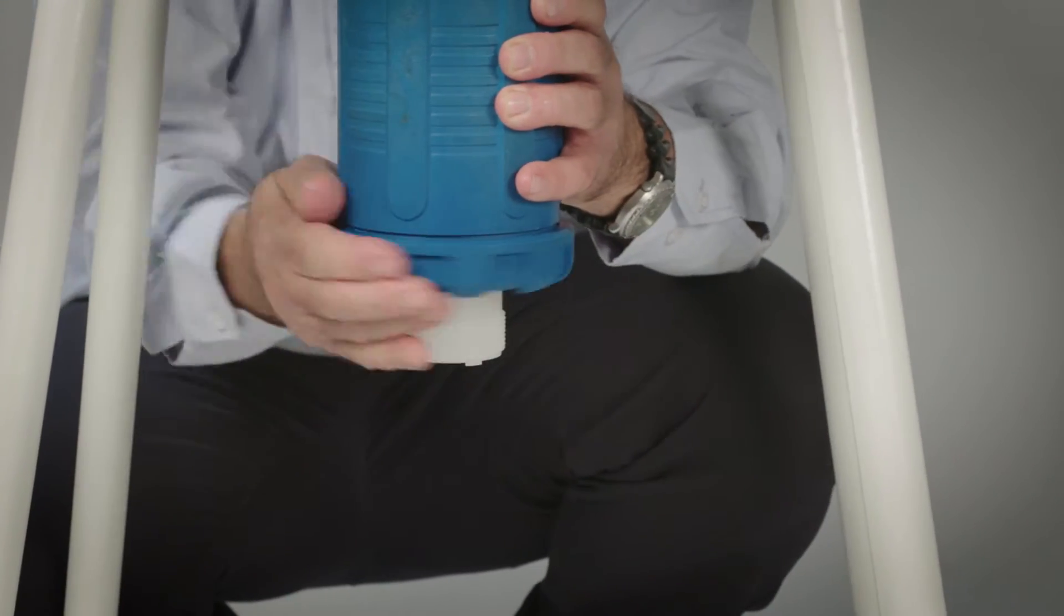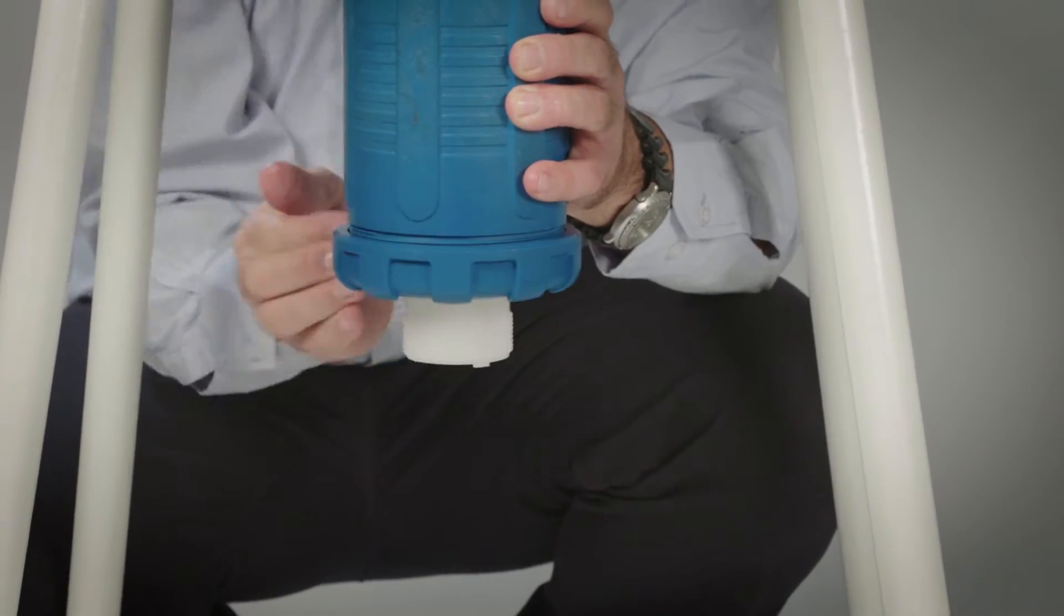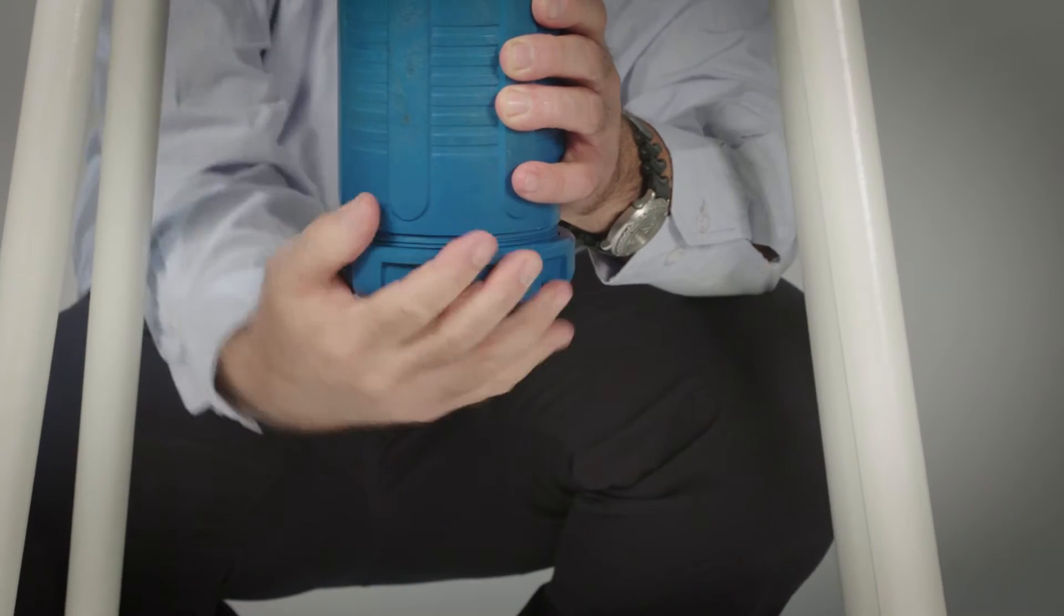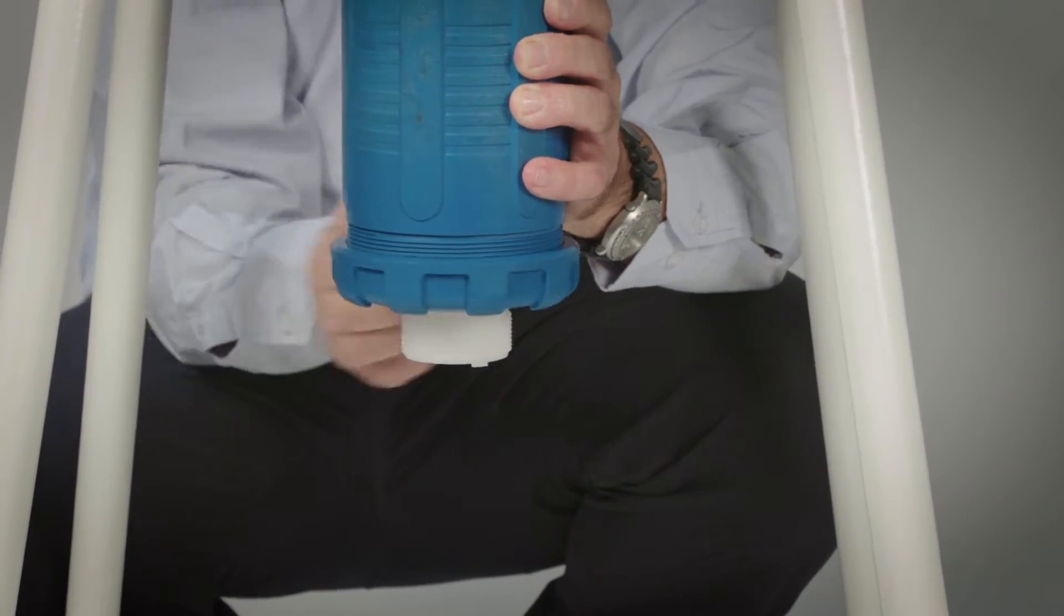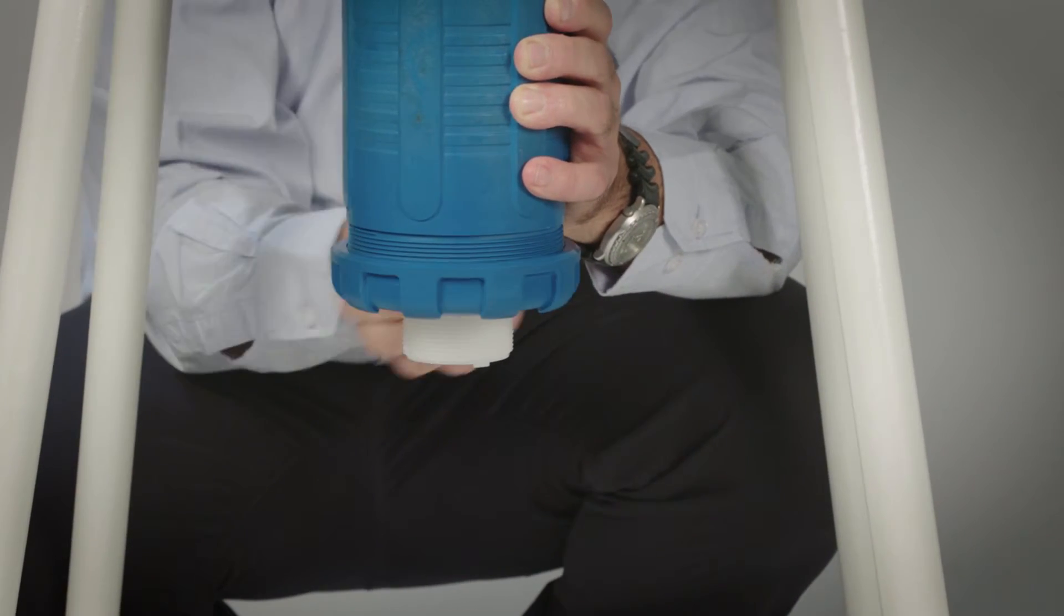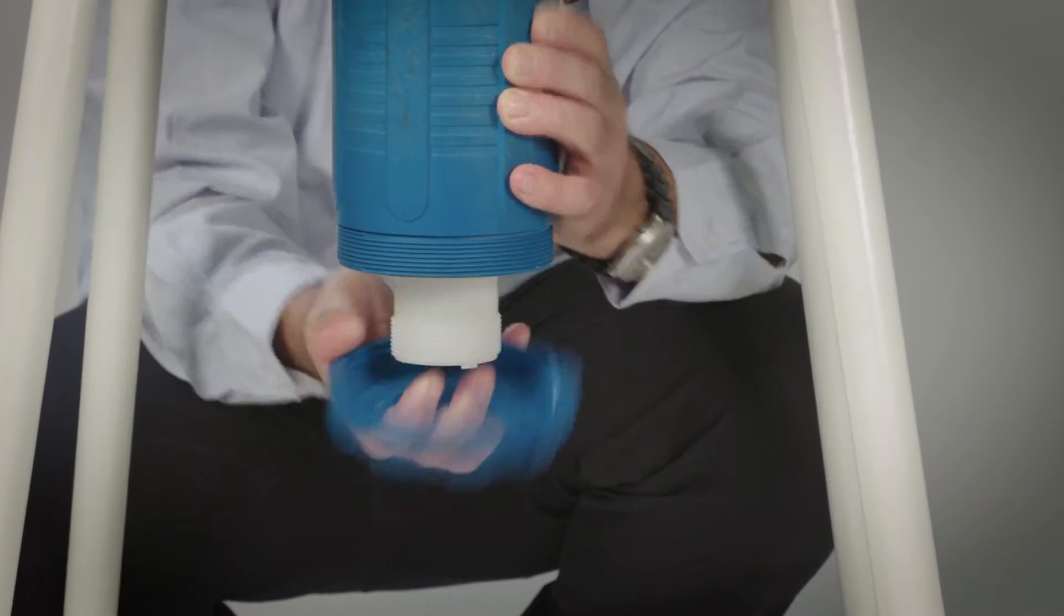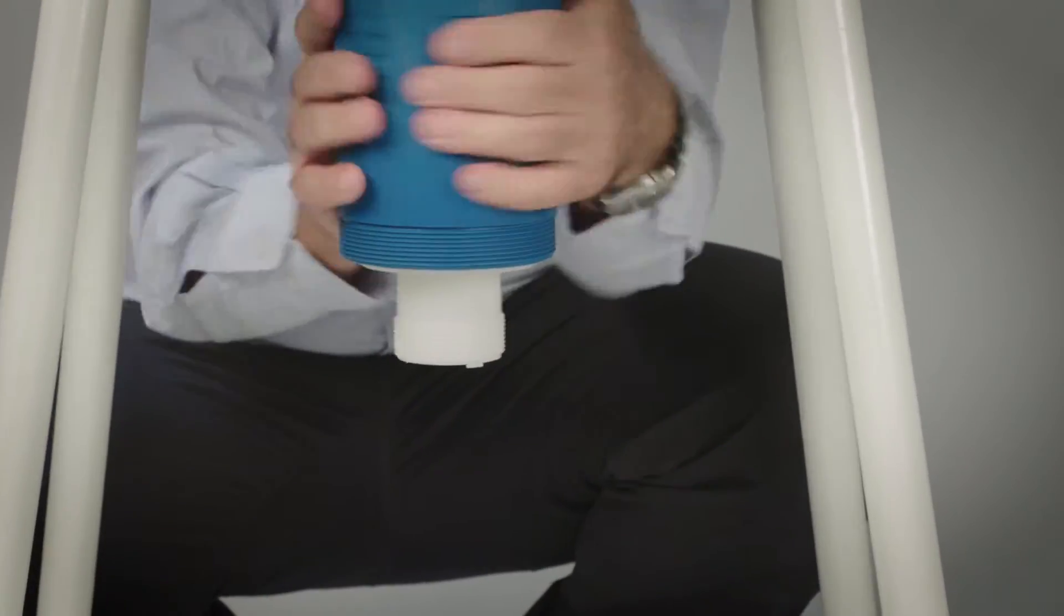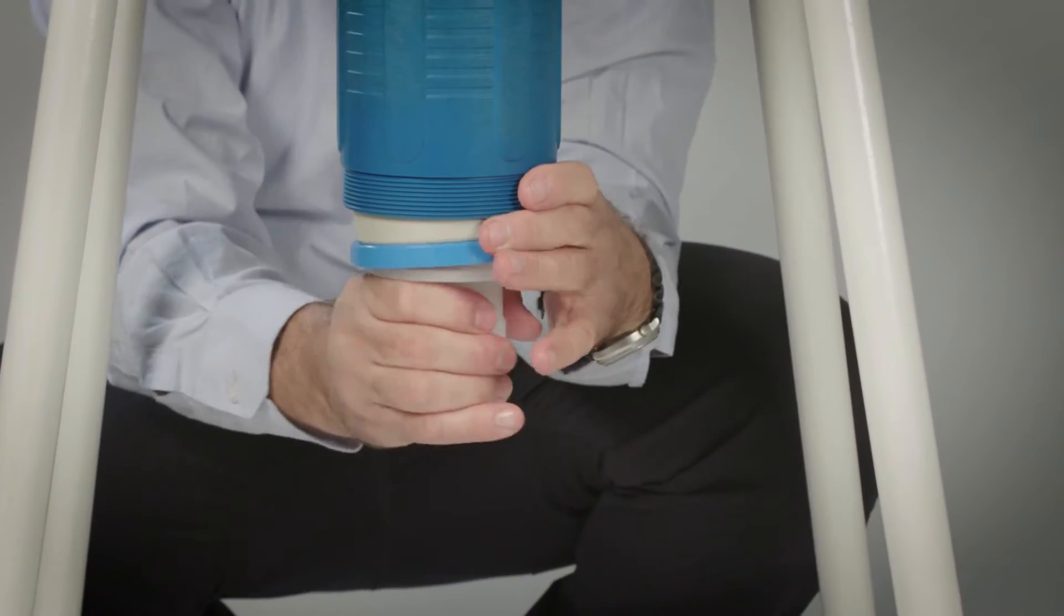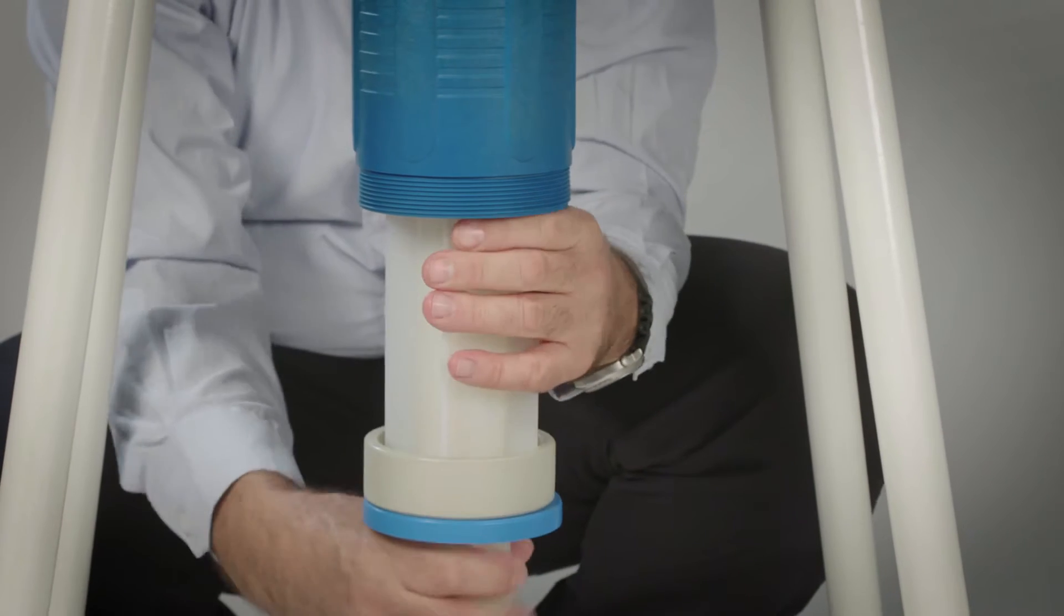Release the locking nut from the adjustment nut. Pull the white suction cylinder away from the suction assembly.